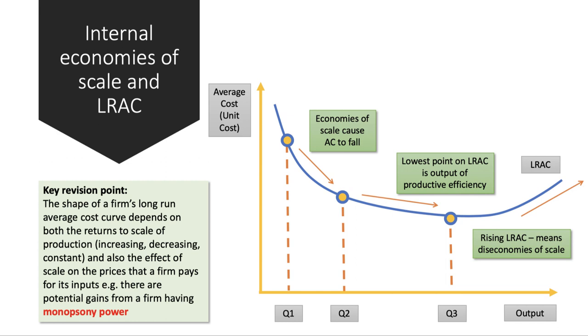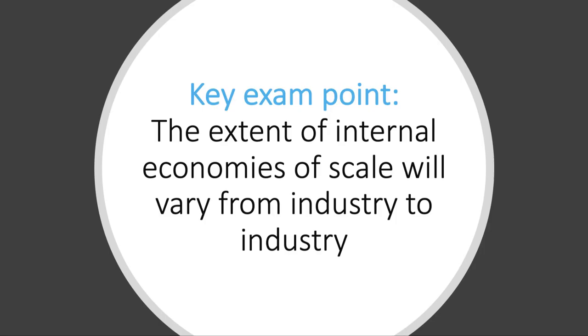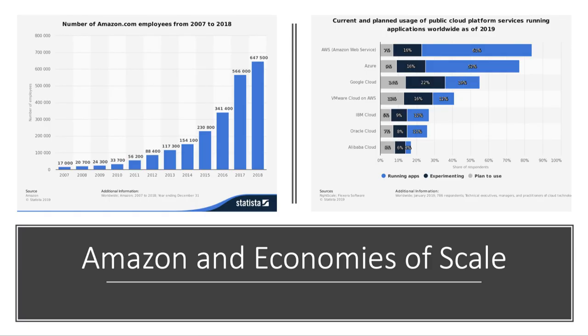Q3 will be something close to the minimum efficient scale. Of course, there's always the potential for diseconomies of scale to kick in if the firm goes beyond its optimum size. Another key exam point: the extent of internal scale economies will vary from industry to industry. Here's a good example of a business that is now on an enormous, giant scale.